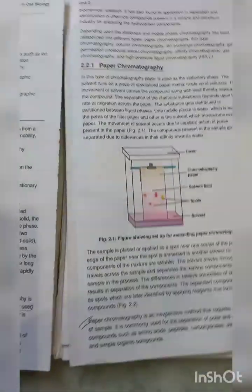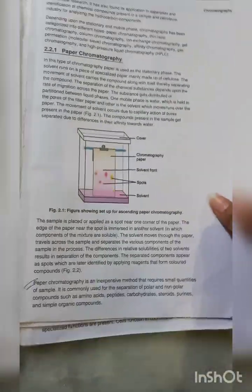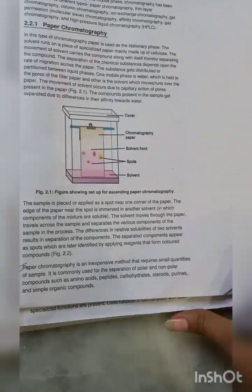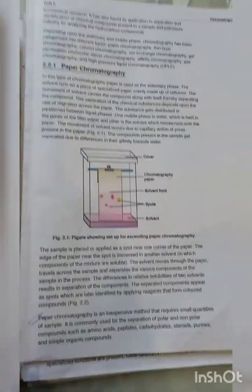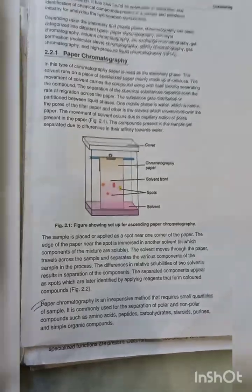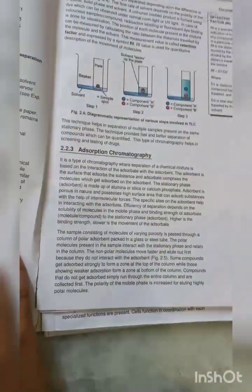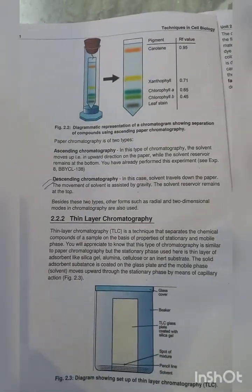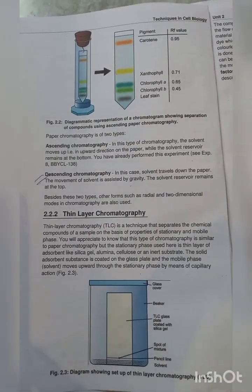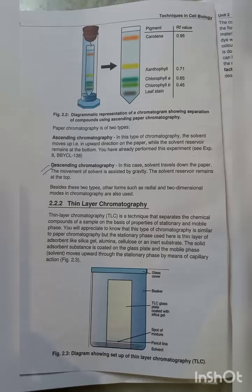Now one question was also from what is descending chromatography. For that, you should have known that descending chromatography is a part of paper chromatography. This is descending chromatography in which solvent travels down the paper. You should also be aware of ascending chromatography. Basically, these are different types of chromatography. I am just highlighting which are given.